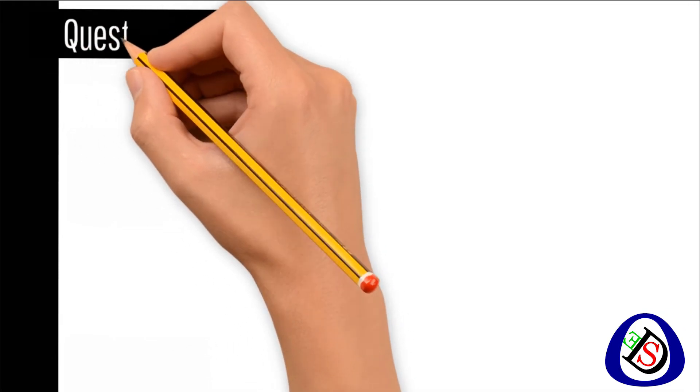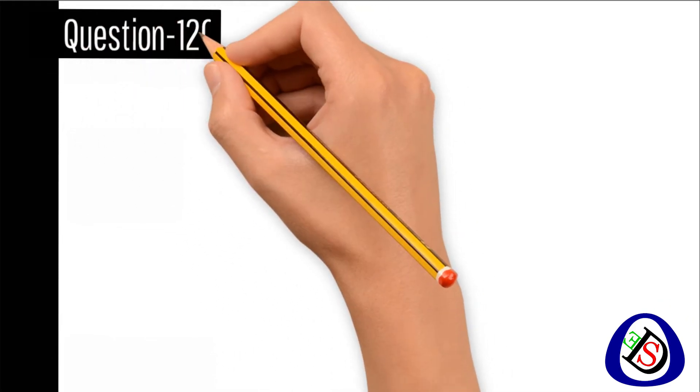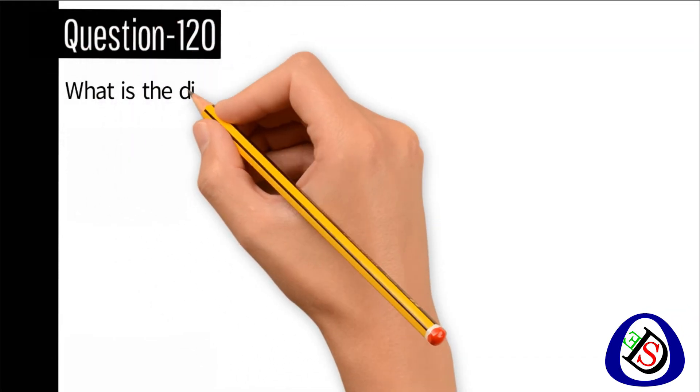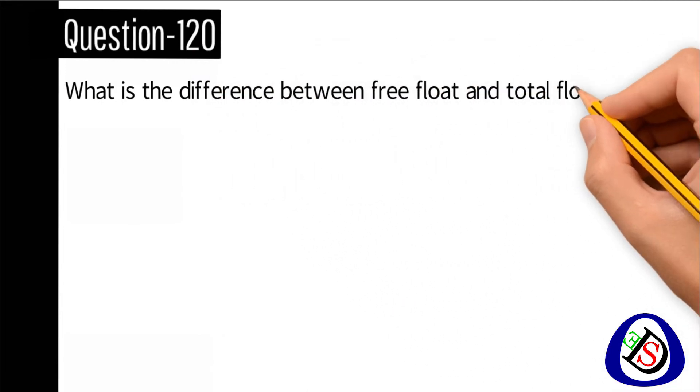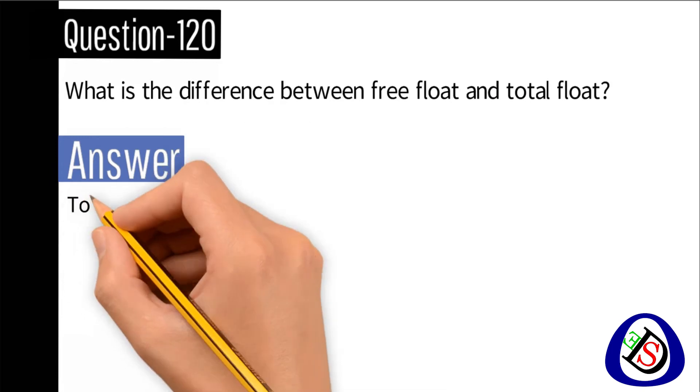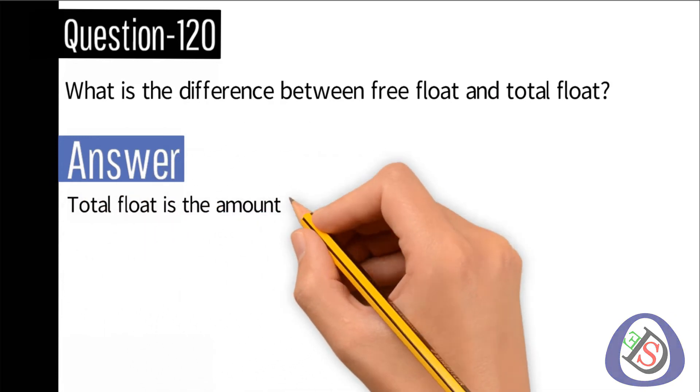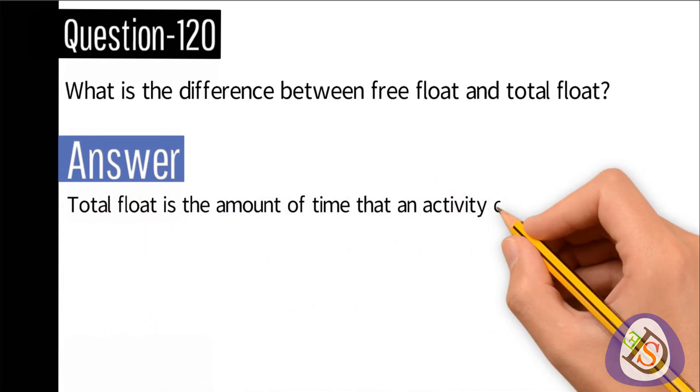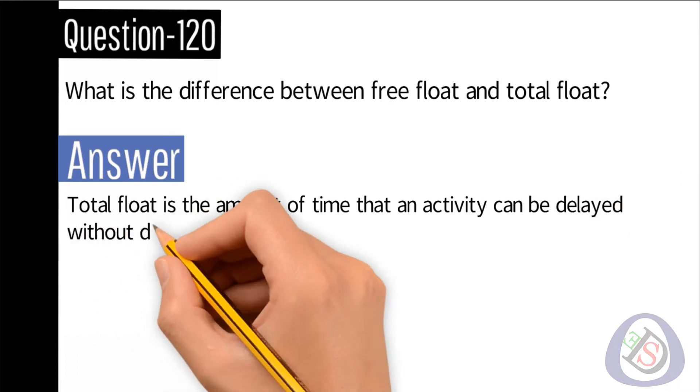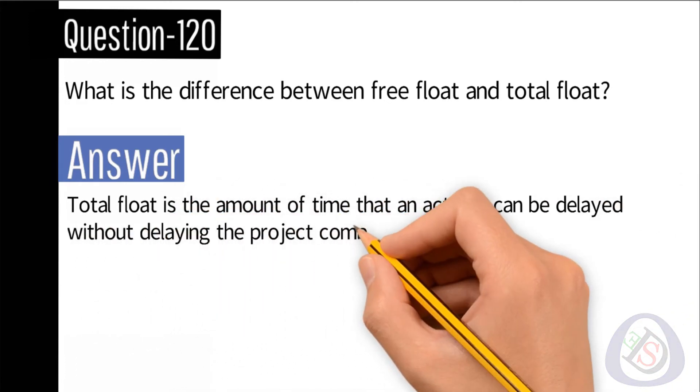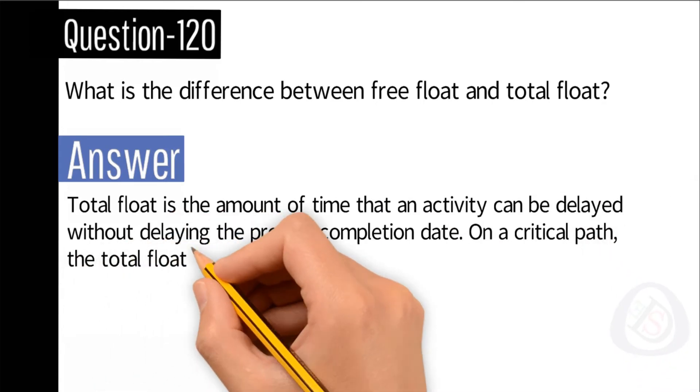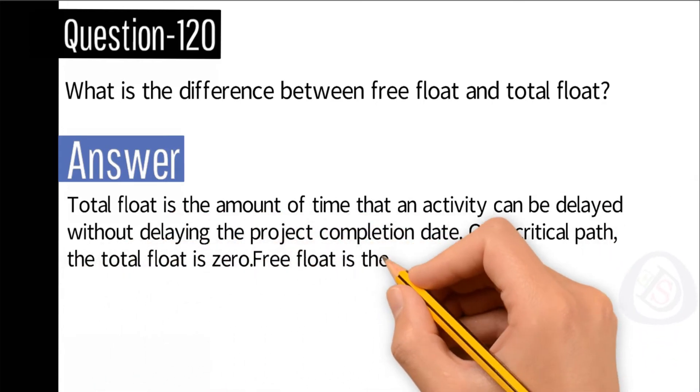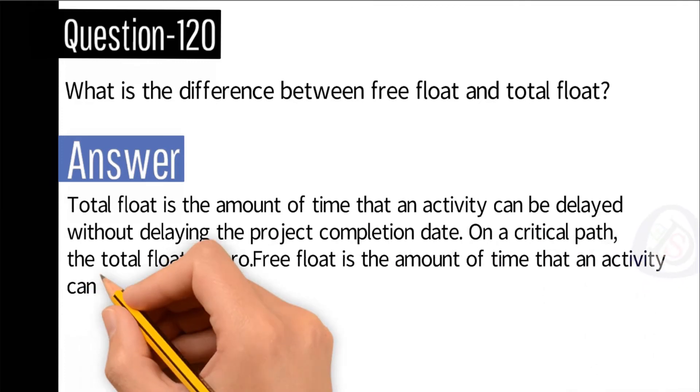Question number 120: What is the difference between free float and total float? Answer: Total float is the amount of time that an activity can be delayed without delaying the project completion date. On a critical path, the total float is zero. Free float is the amount of time that an activity can be delayed without delaying the early start of its successor activity.